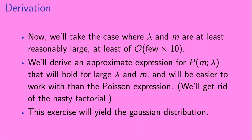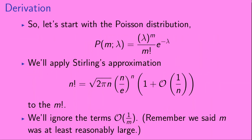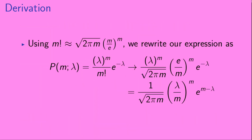We'll take the case where lambda and m are at least reasonably large — at least of order a few times 10. We'll derive an approximate expression for the Poisson distribution that holds for large values of lambda and m and is easier to work with. Basically, we're going to get rid of that nasty factorial. This exercise will yield the Gaussian distribution. Let's start with the Poisson distribution and apply Stirling's approximation to that m factorial in the denominator. Stirling's approximation tells us that n factorial is equal to the square root of 2 pi n, times n over e all raised to the n power, times 1 plus terms of order 1 over n. Since m is reasonably large, we're going to ignore the terms of order 1 over m.